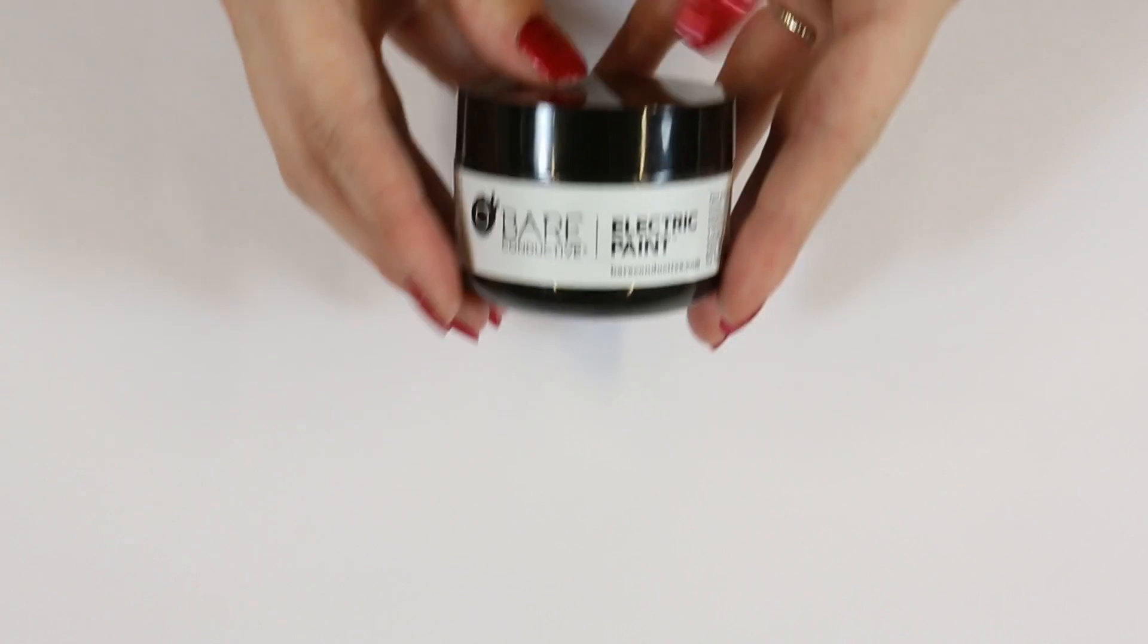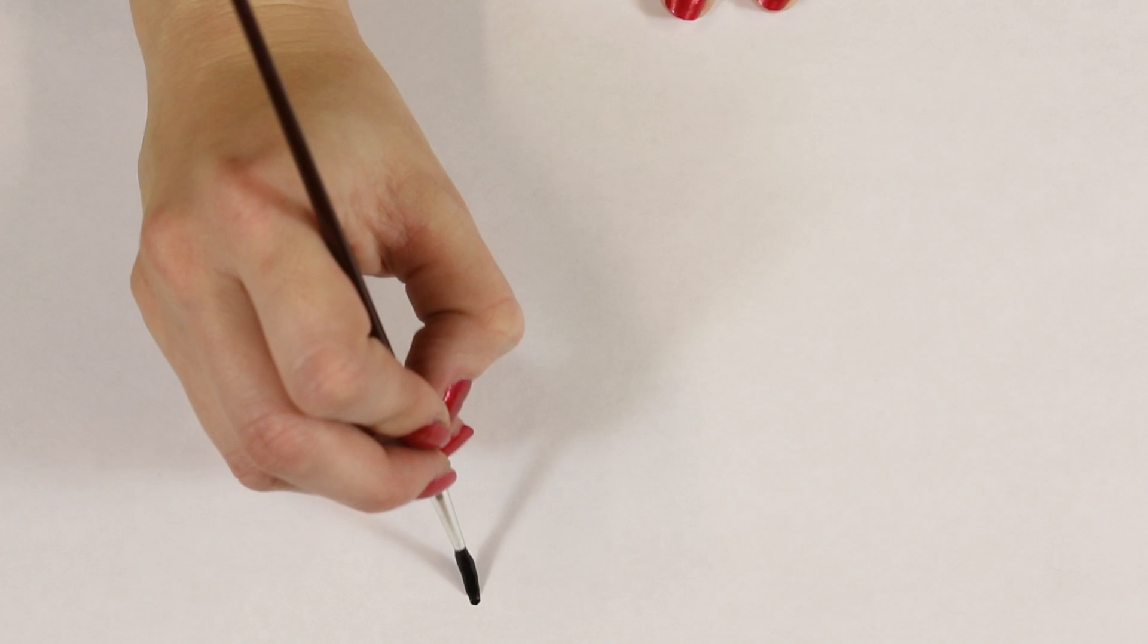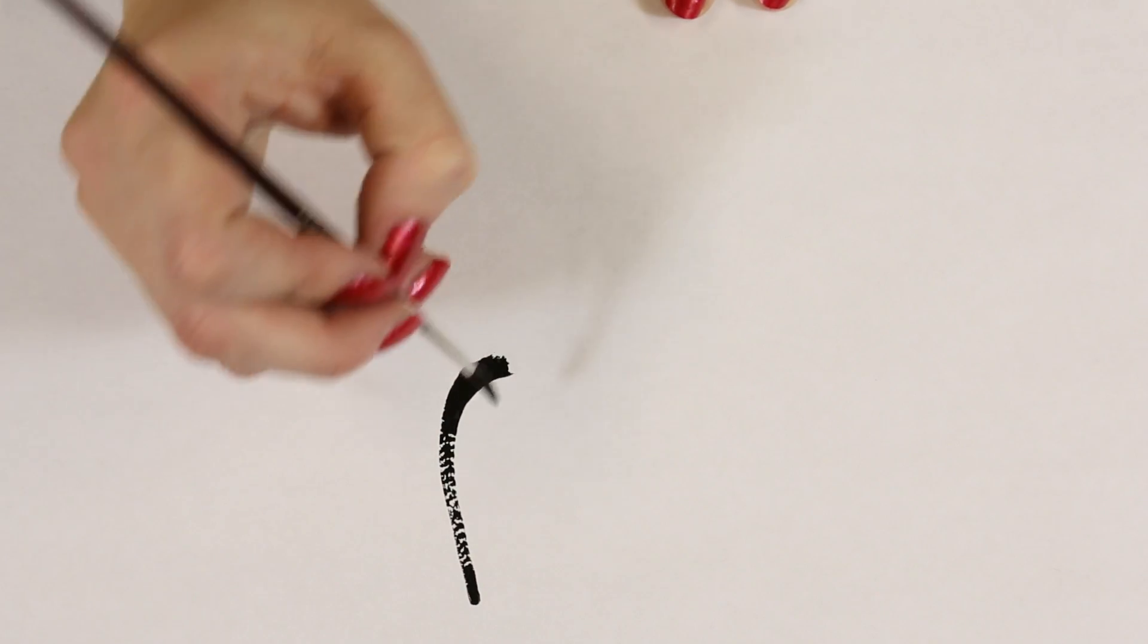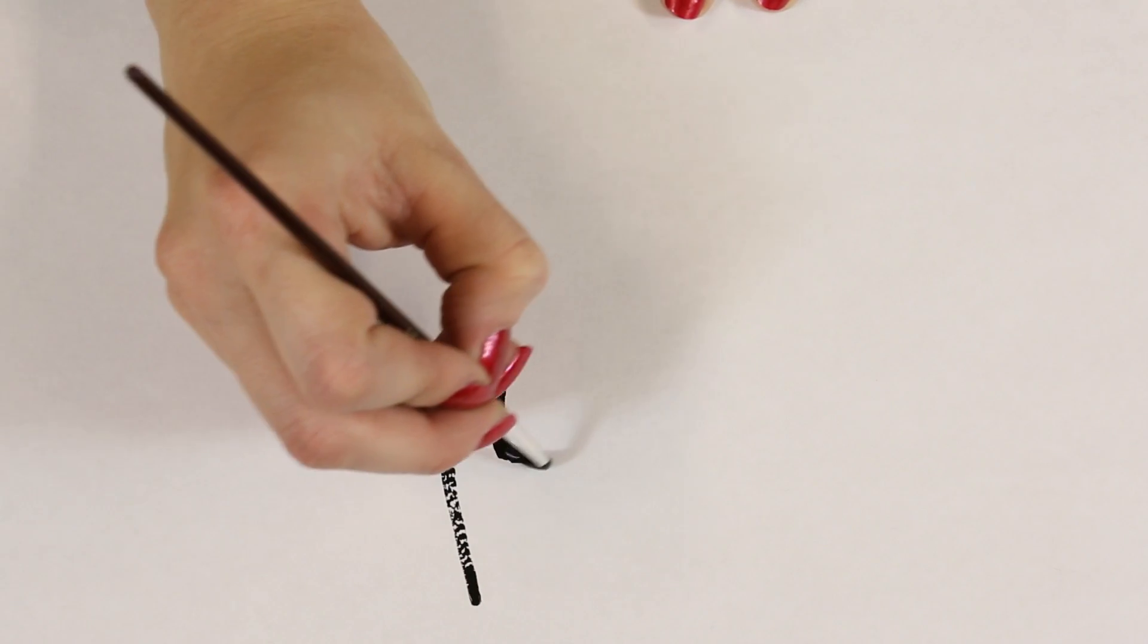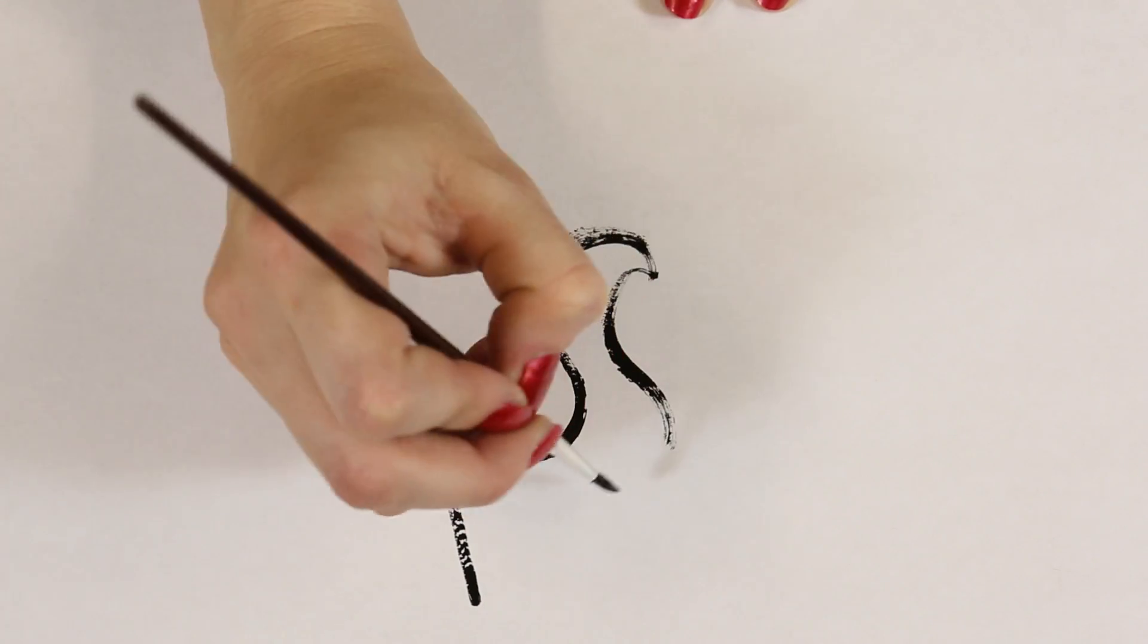And today we want to share some of our favorite products from the Bare Conductive line. Bare Conductive paint has been on our storefront for a while. It's a thick black water-based conductive paint and it comes in 10 milliliter squeeze pens or 50 milliliter jars for larger projects or anything that will work better with a brush, sponge, roller, anything like that.